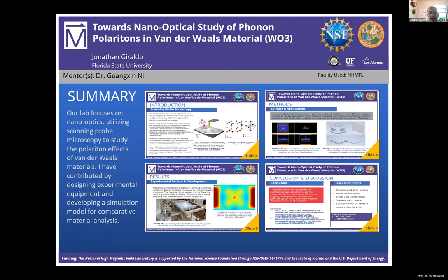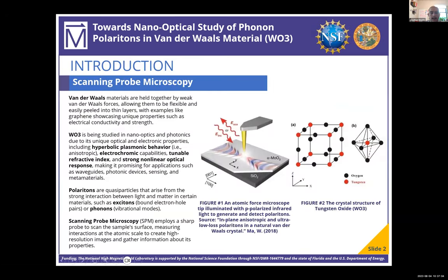What I've contributed is designing experimental equipment and developing a simulation model to compare material analysis utilizing the scanning probes. Van der Waals materials are materials that are held together by very weak bonding forces, and this allows them to be flexible and easily peeled into thin layers. A good example is graphene, which is known for its electrical conductivity and strain properties.